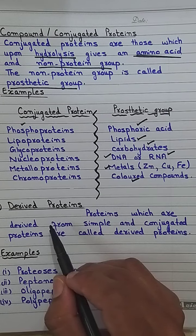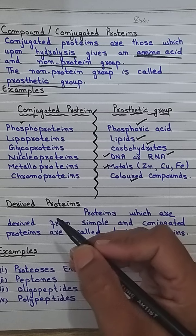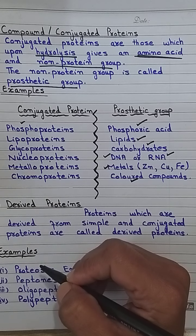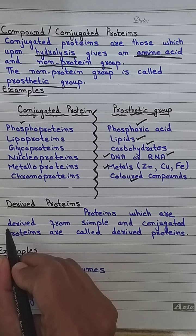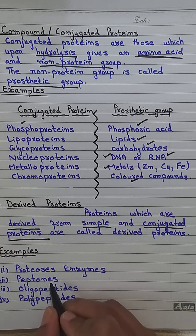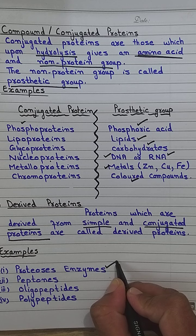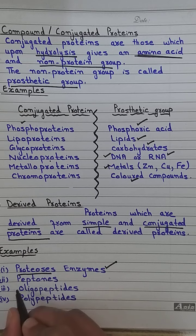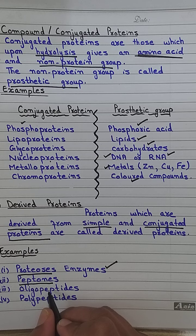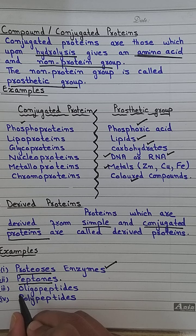The last type of proteins are derived proteins. Derived proteins are those which are derived from simple and conjugated proteins. So they are formed from and derived from simple and conjugated proteins. Examples include peptones, oligopeptides, and polypeptides.